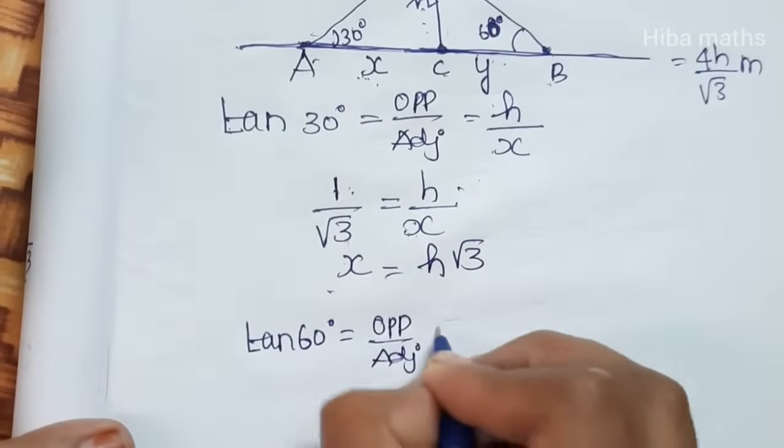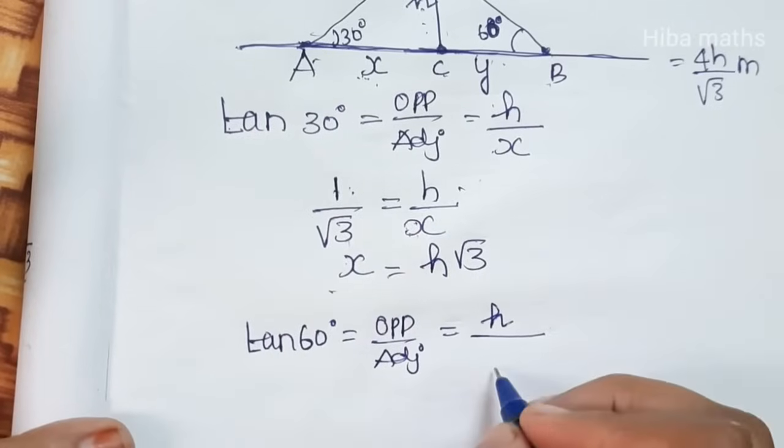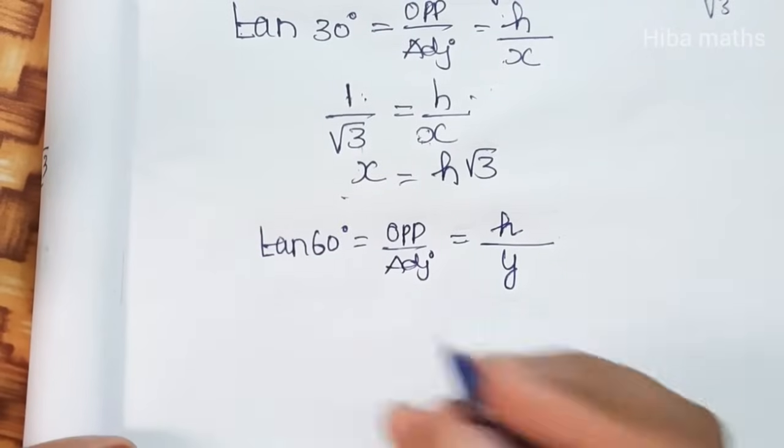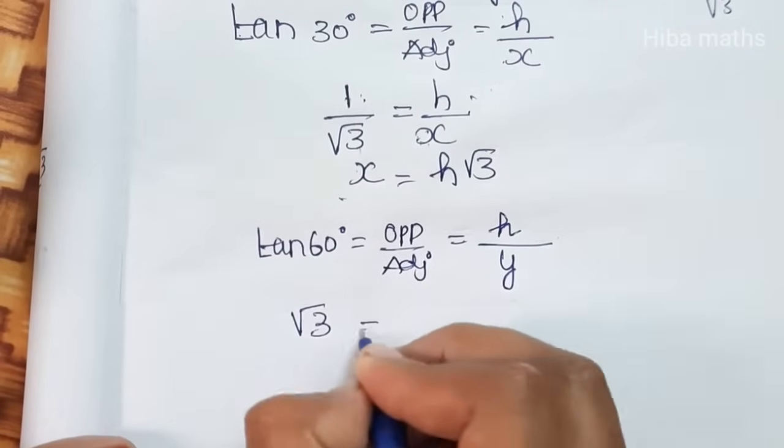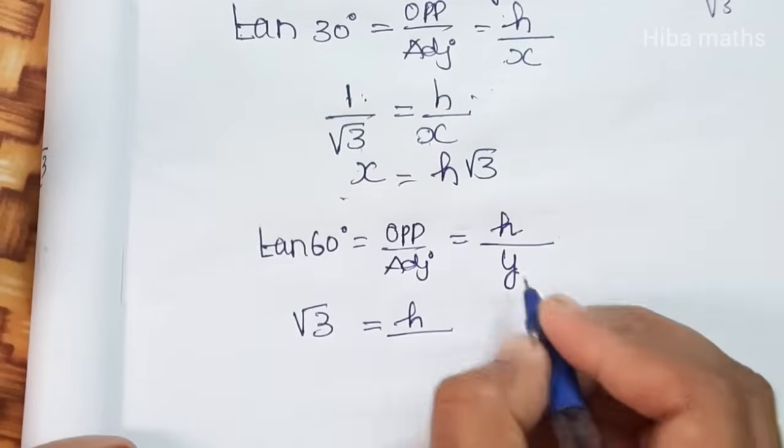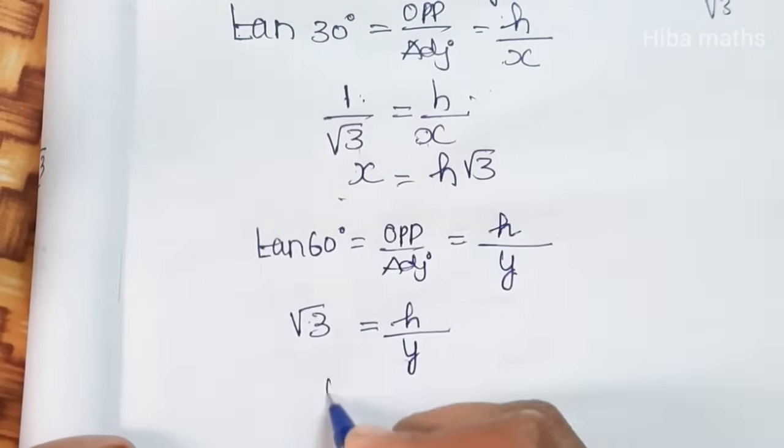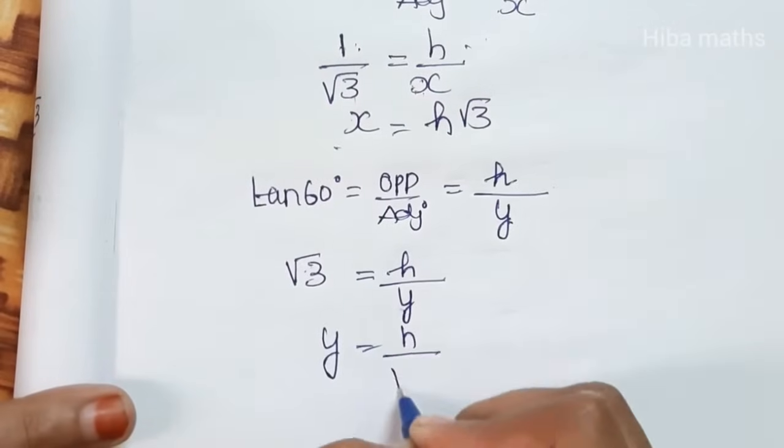Now for the other triangle, tan 60 degrees equals opposite by adjacent. Opposite is h, adjacent is y. Tan 60 value equals root 3, so root 3 equals h by y. Therefore y equals h by root 3.